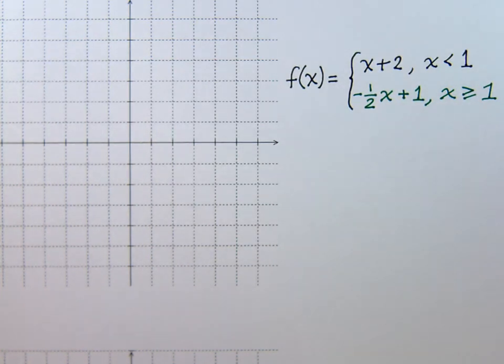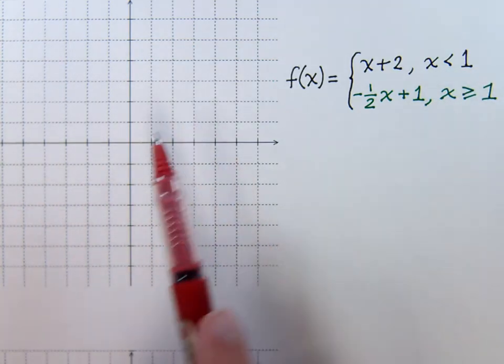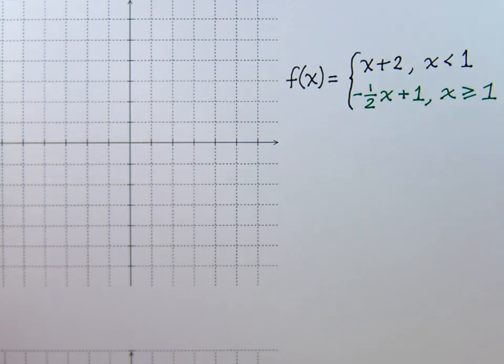In this video, we want to look at graphing a piecewise defined function. A piecewise defined function is made up of two different pieces. We can't graph both of them all the way from left to right because it wouldn't be a function anymore if we did that. It would fail the vertical line test.